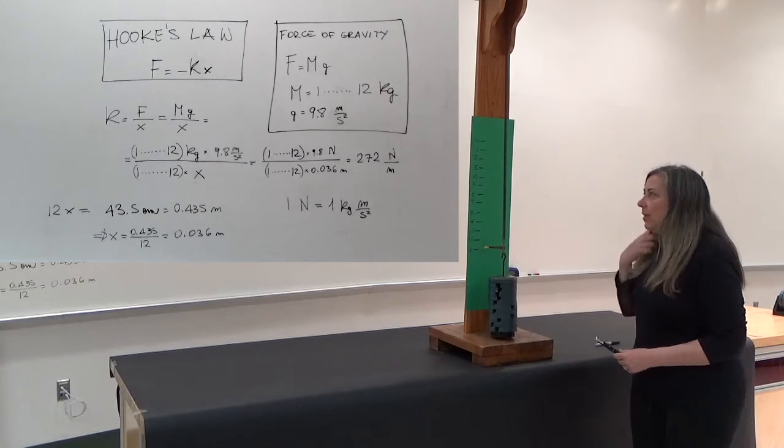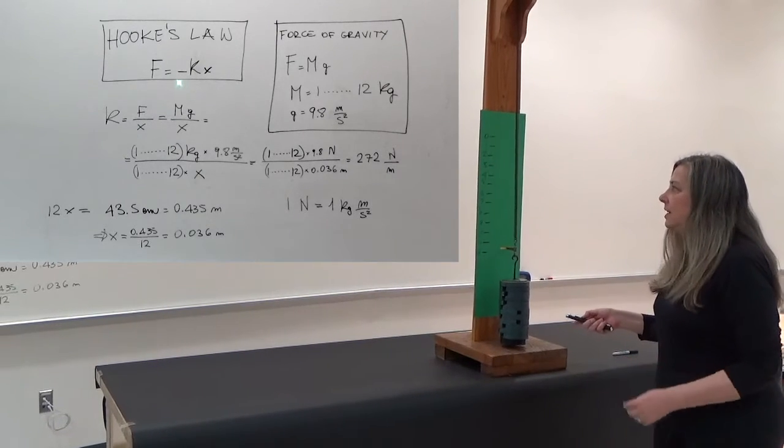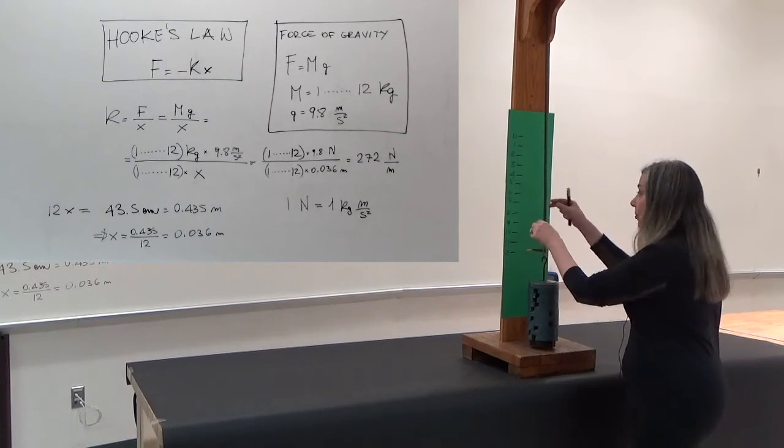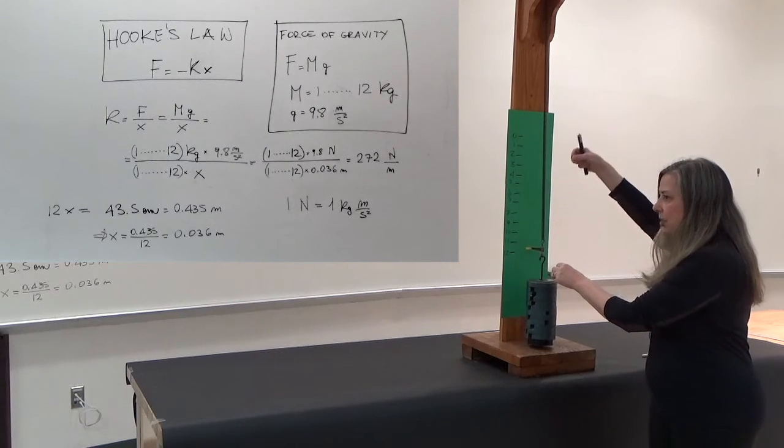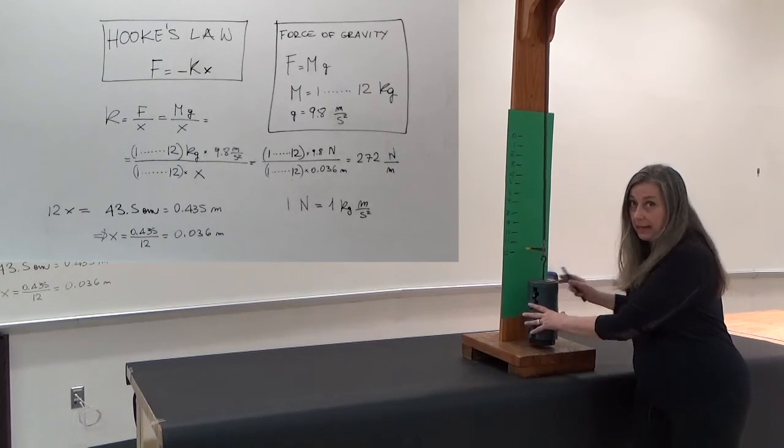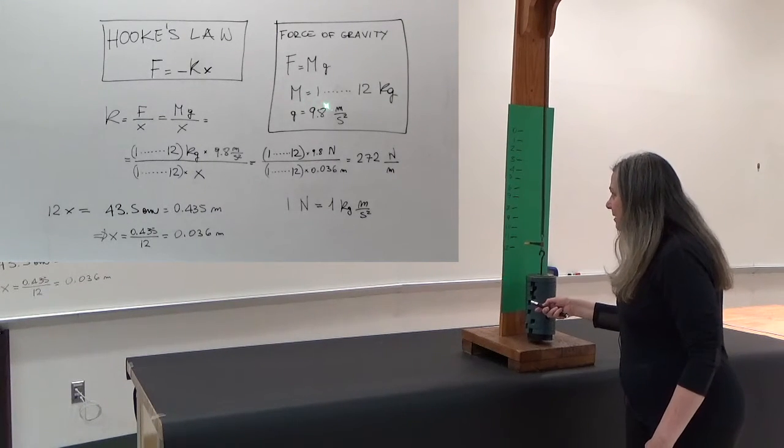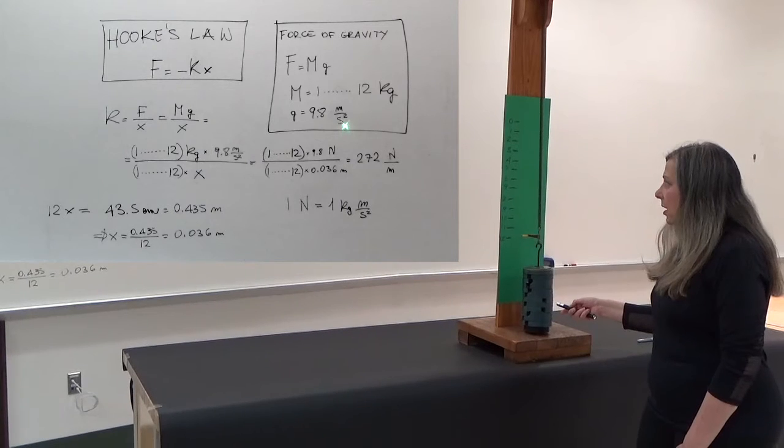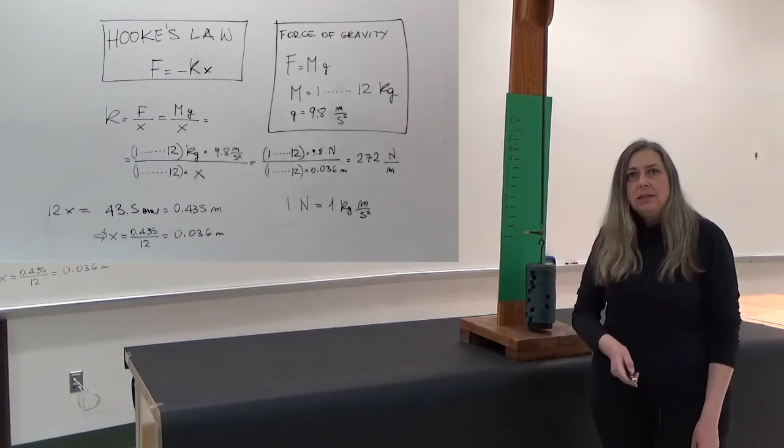If I want to calculate what k is, I'm going to refer to the board again. The force acting on these masses is actually the force of gravity, not only the Hooke's force, the elasticity force given by the spring, but the force of gravity that obviously acts on these masses. So if m is the mass and g is the acceleration of gravity, 9.8 meters per square second, the force of gravity is mass by acceleration of gravity.